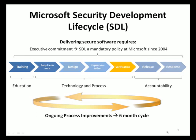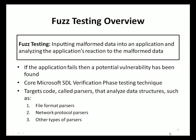This presentation focuses on fuzz testing and how it can be used to uncover vulnerabilities in applications, specifically within the verification phase of the Microsoft SDL. A majority of all application vulnerabilities that exist today are due to developers failing to validate untrusted input. Fuzz testing is the process of creating and inputting malformed data into an application and observing the application's reaction to such malformed data. If an application fails due to processing the malformed data, then a potential vulnerability has been discovered. The types of vulnerabilities discovered through fuzz testing are generally very serious in nature.